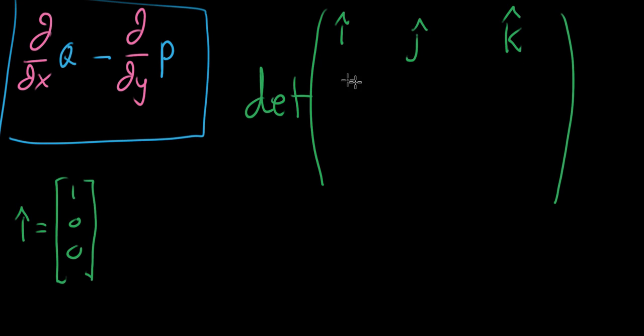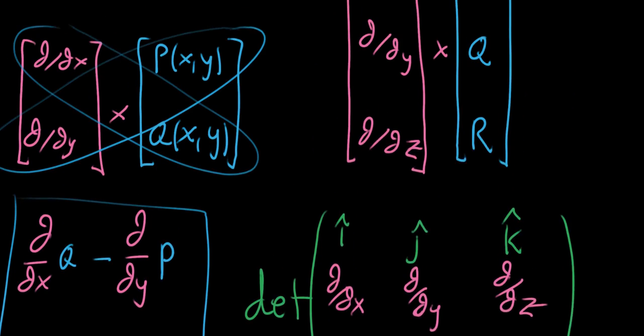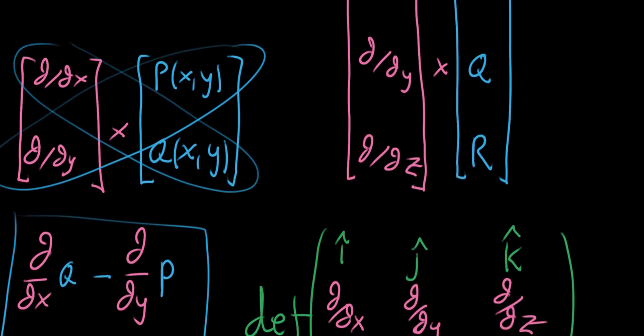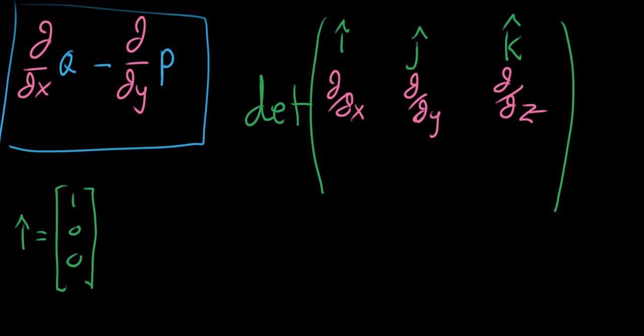Then we're going to take the first vector that we're doing the cross product with and put its components in the next row. The next row has partial partial x, and then the second component partial partial y, and the third component partial partial z. And then for the last row, you put in the second vector, which in this case is vector-valued function p, q, and r.